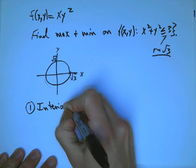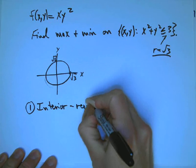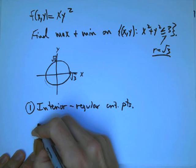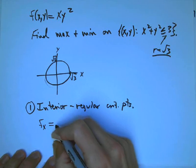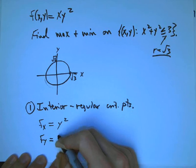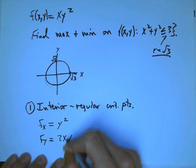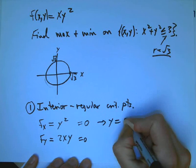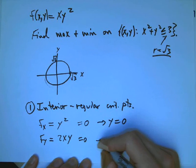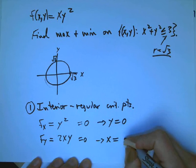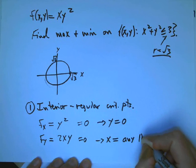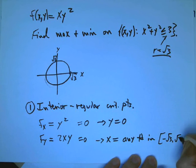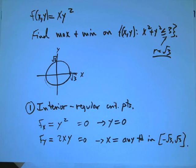So the first thing is, you always do the interior and do regular critical points. And so we're going to find where the gradient is 0, or in other words, where the two partial derivatives are equal to 0. So there's our two partials. If I set those both equal to 0, then y has to be equal to 0. And x, then, can be anything. Of course, it has to be between minus root 3 and root 3.